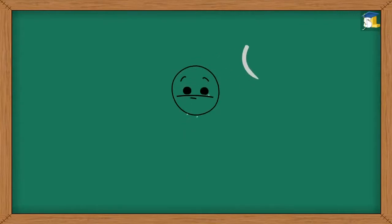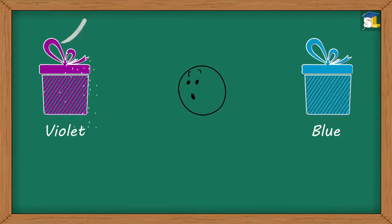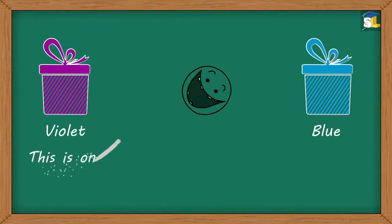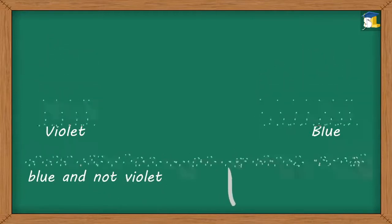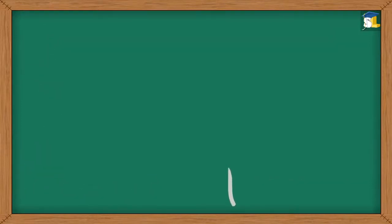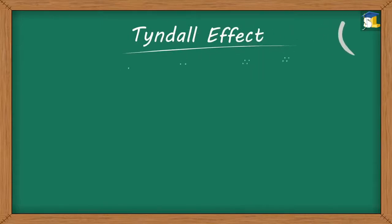Do you think that our eyes have a natural inclination towards blue, as compared to violet? Yes, this is one of the reasons why our sky appears blue and not violet. To understand this, first, let us study about Tyndall effect.